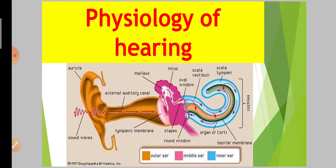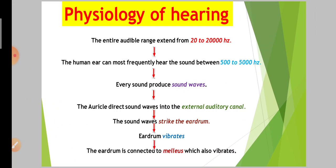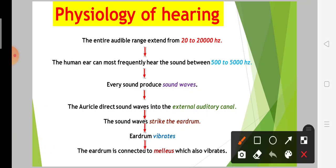Let's start. Firstly, our audible range is 20 to 20,000 hertz, which is our listening capacity. Next, the human ear can most frequently hear sound between 500 to 5,000 hertz.